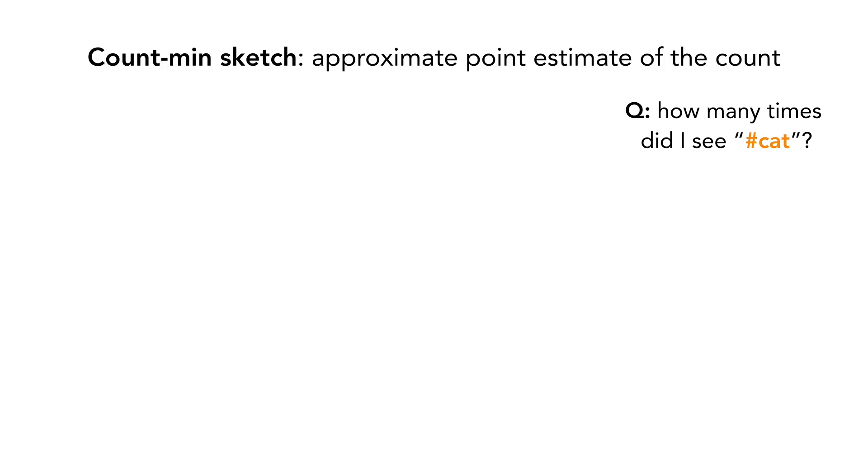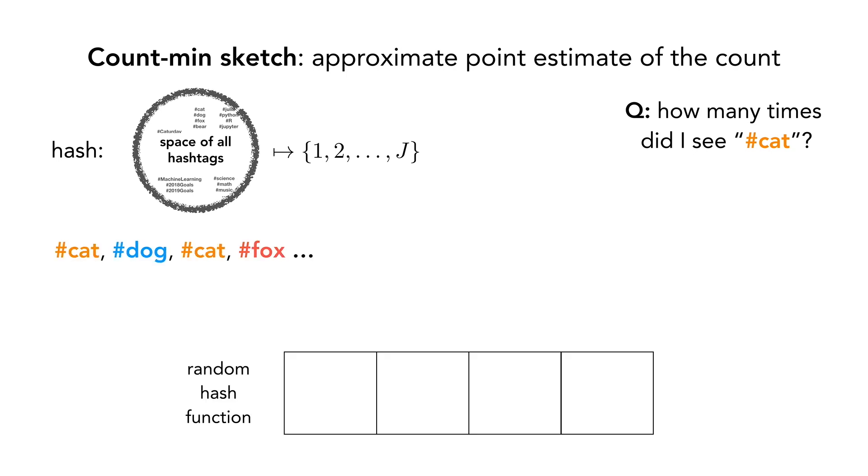The Count-min sketch provides an approximate solution to this question by using random hashing to map the large universe to a much smaller set. For any data stream, a randomly drawn hash function will map two different tokens to the same bin, resulting in a collision.